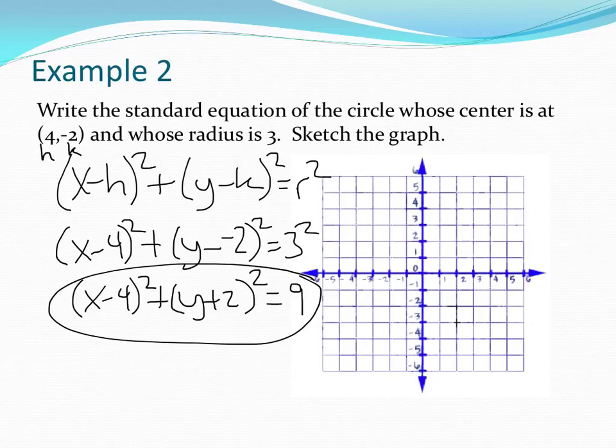Now I want to graph it. My center is 4, negative 2, which means I'm right over here. And when I graph these, my radius is 3. I count 3 up, put a dot here, 3 over, put a dot over here, 3 down, put a dot here, and 3 to the left. And now I'm going to connect these dots best I can for my circle.